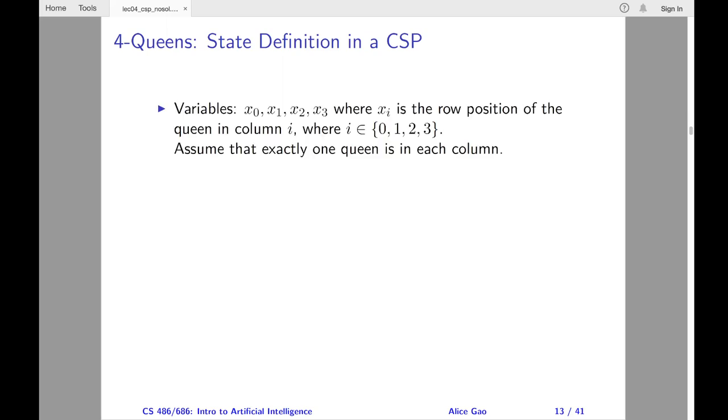I will define four variables, x0 to x3. The subscript i refers to the column for each queen. For example, x2 is the queen placed in the third column from the left. The value of each variable is the row position of the queen. For example, if x0 has the value 0, the leftmost queen is in the top row.